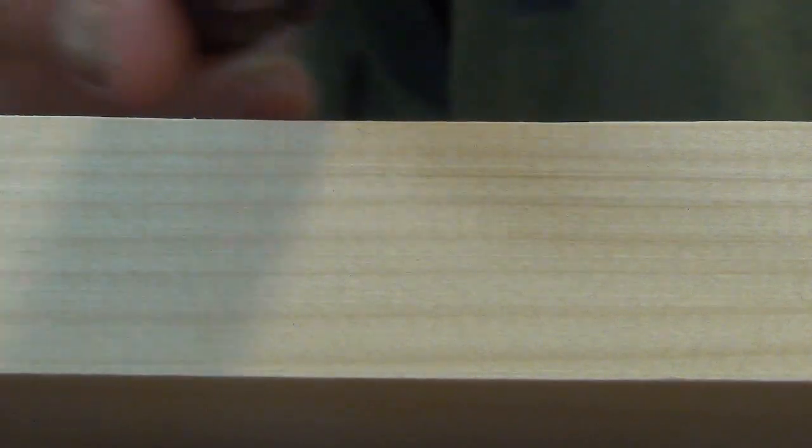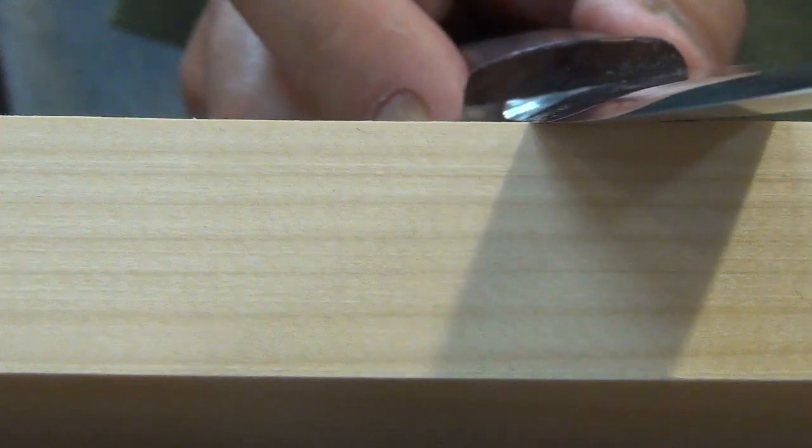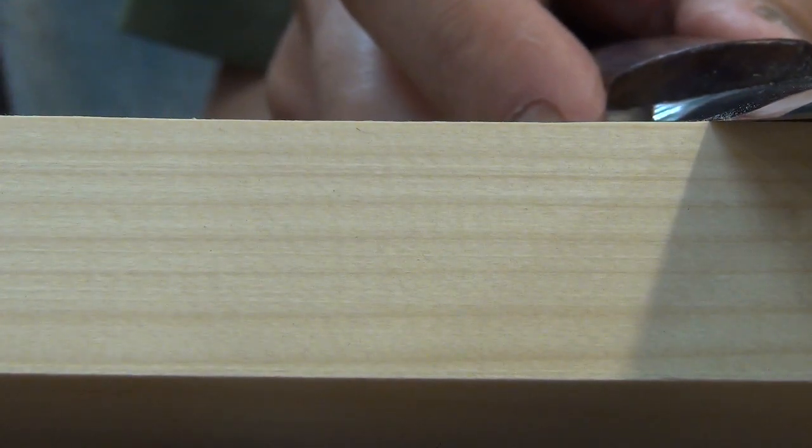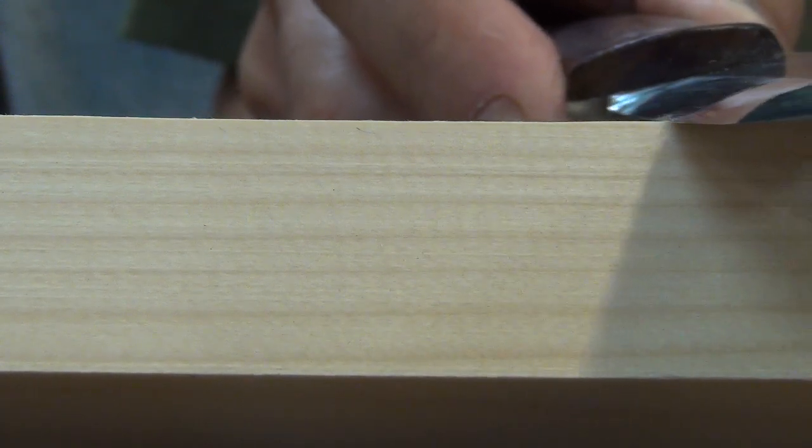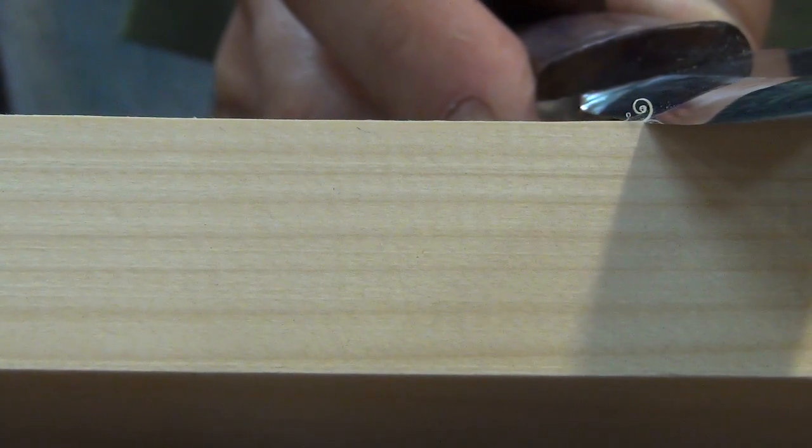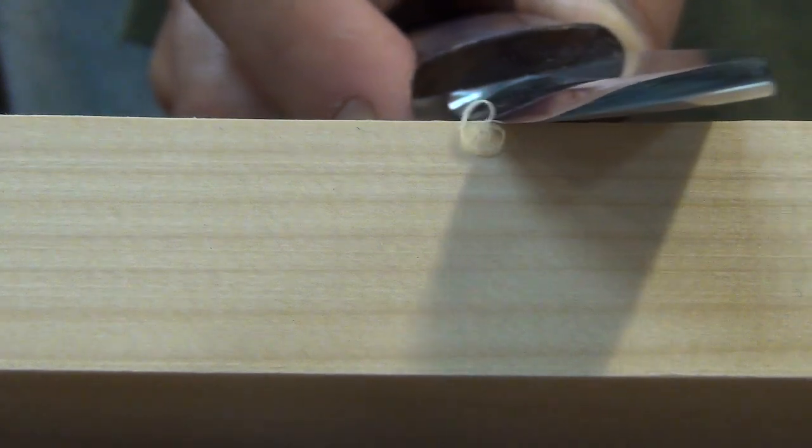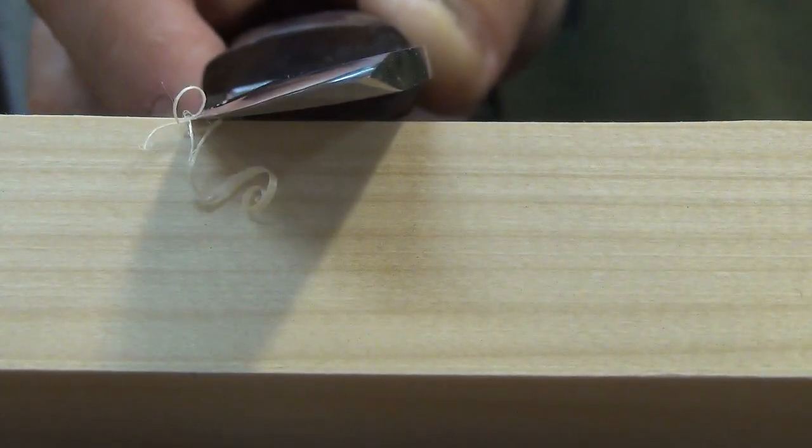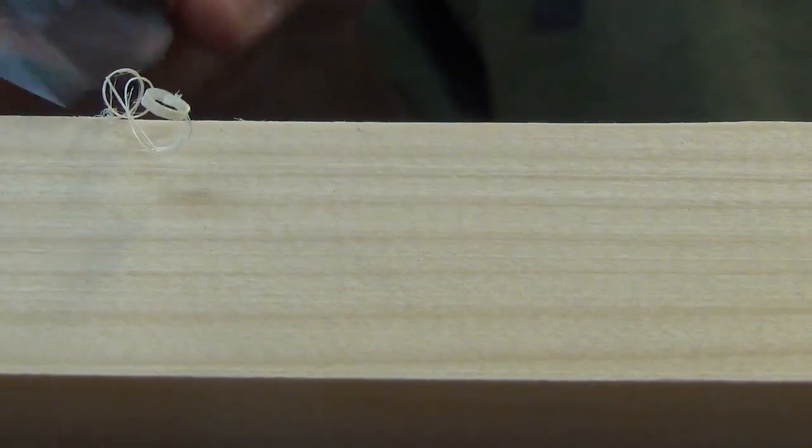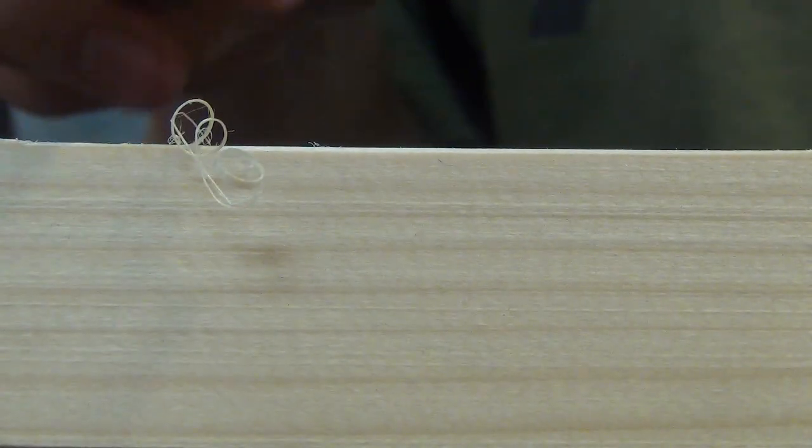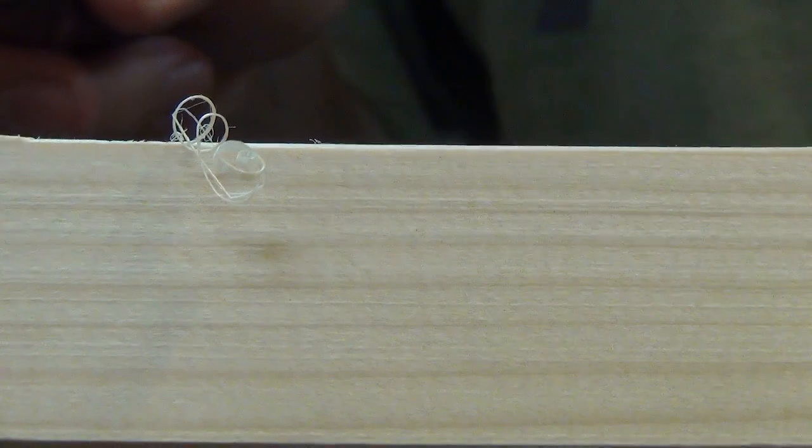This is asymmetrical hybrid grind, shallower side on the wood side. Very easy to make this thin curl.